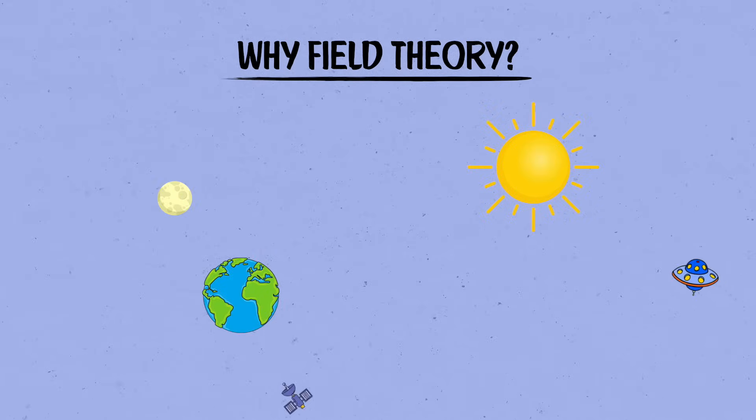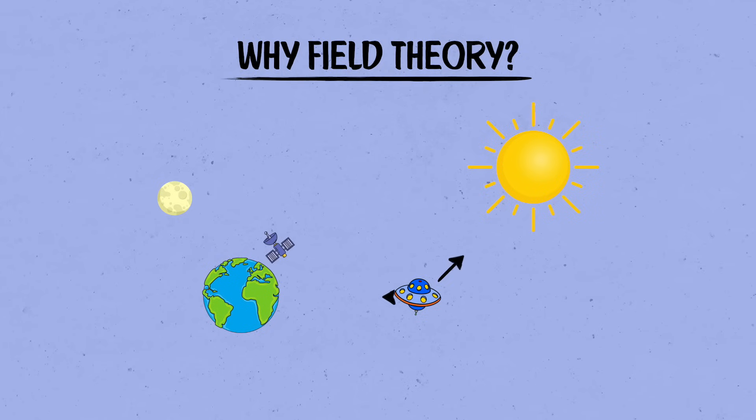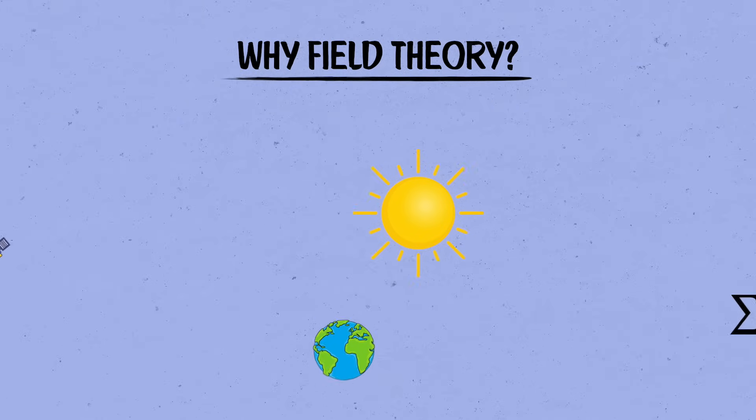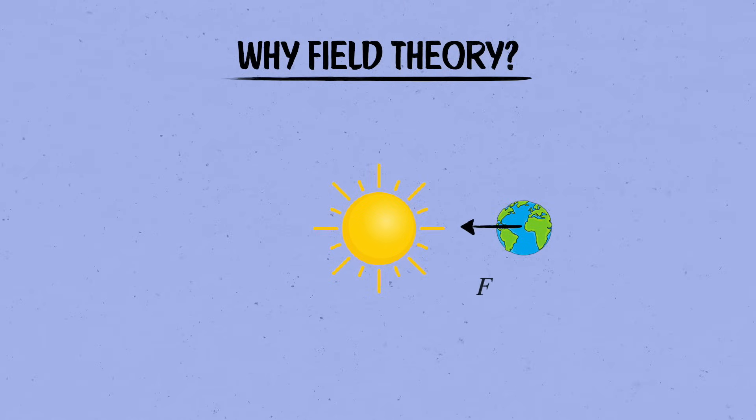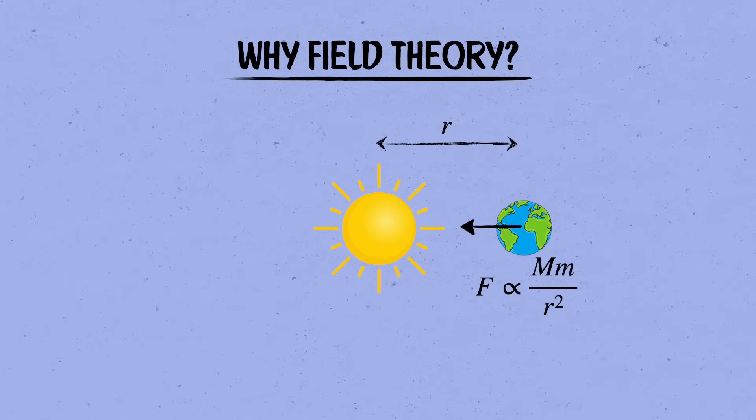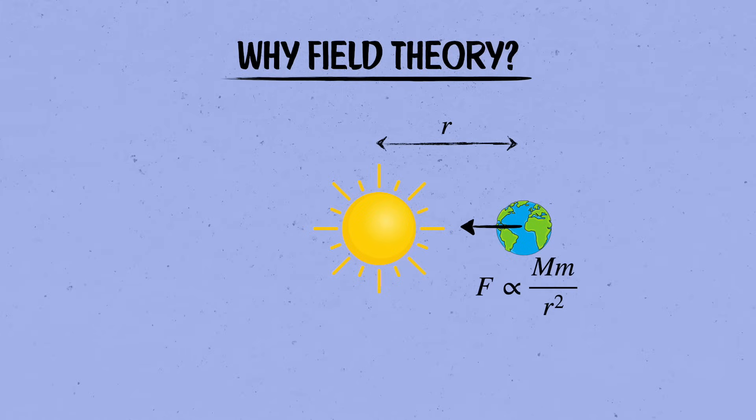We all start out in physics by looking at a bunch of particles, writing down the total force on each one, and then setting it equal to ma. Think about the sun and earth for example. According to Newton's law of gravity, the sun exerts a force on the earth that pulls it toward it. The force is proportional to the mass of each, and goes as 1 over the distance squared between them. Then we can write down f equals ma for the earth and solve for its orbit around the sun. This was one of the first and most important accomplishments of modern physics.